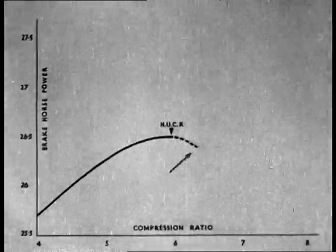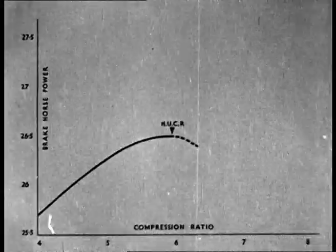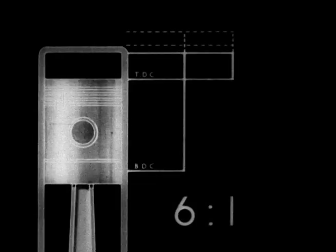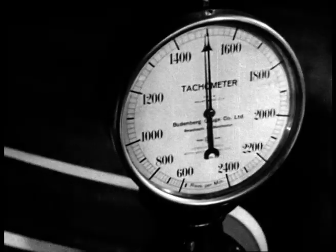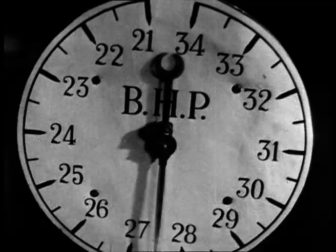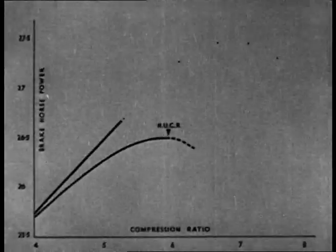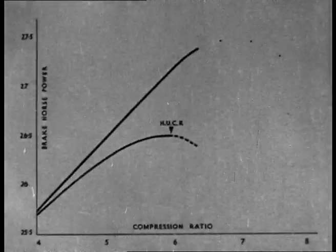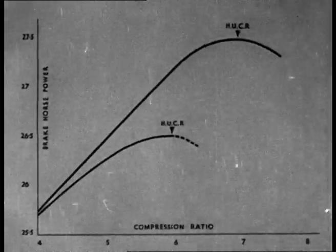After this, there is no further increase of power output. The HUCR is a measure of the fuel's anti-knock value. We will now test another fuel at a higher compression ratio. Engine running steadily — increase in power output. This petrol doesn't knock as quickly as the first fuel. It gives a higher HUCR.